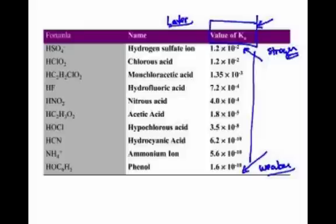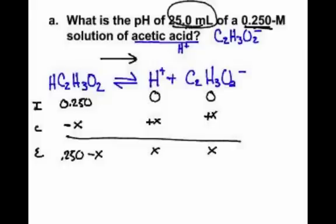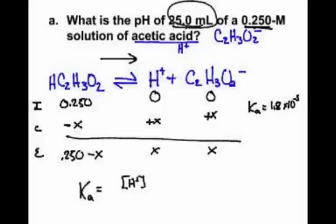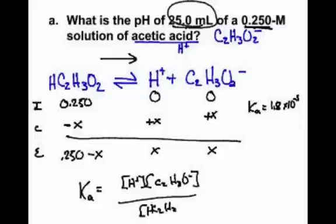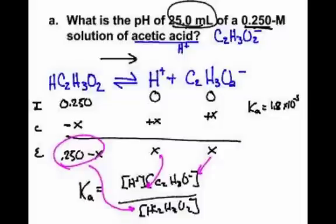Going back to the chart — acetic acid has a Ka of 1.8×10⁻⁵. So the Ka expression equals the concentration of H⁺ times the concentration of acetate, divided by the concentration of acetic acid — products over reactants. I'll plug in 0.250 minus X on the bottom and X times X on top, with Ka equal to 1.8×10⁻⁵.